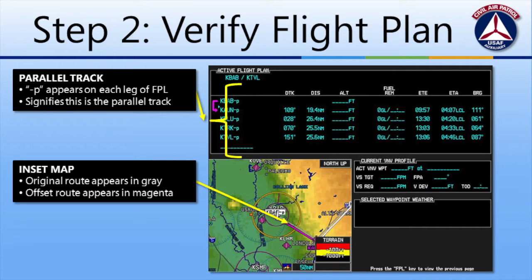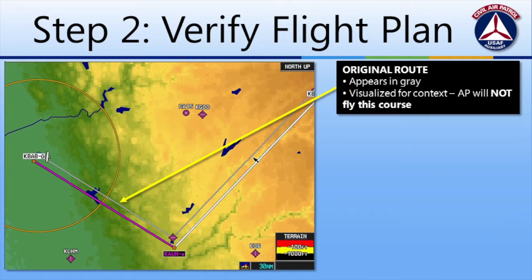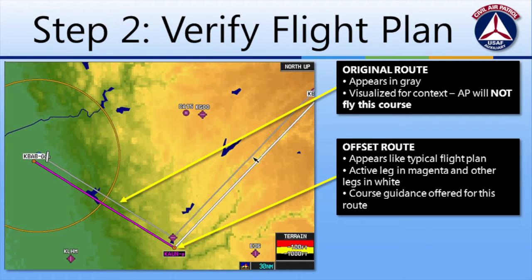We can also see that the inset map has been updated to reflect the parallel route. Shown here in a larger view, we can see that the original route we entered into the flight plan is now depicted in gray. The parallel route is shown next to it in magenta and white. Course guidance will now be provided for the parallel route, including queuing on the MFD and PFD.